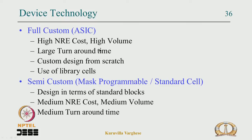Many people do not have the luxury of high volume to justify ASIC cost. They can go for semi-custom or standard cell design, where the foundry provides standard designs and you build your system from those. The foundry already has the layout for those blocks, so when you send the interconnection netlist it is quickly assembled. This works for medium volume with medium NRE cost and medium turnaround time.